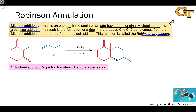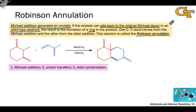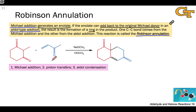Before discussing the mechanism in detail, let's look at the starting materials and products, because there's a complicated addition process going on here. The overall reaction is an addition, since we're taking two substrates and forming a single product. The first thing to notice is that the substrates are a beta-diketone and an alpha-beta-unsaturated ketone.